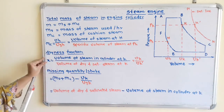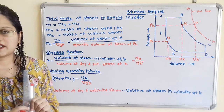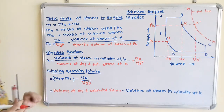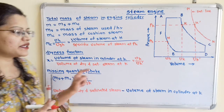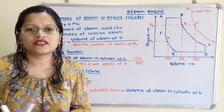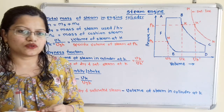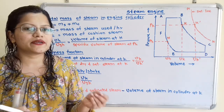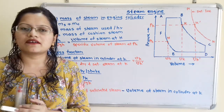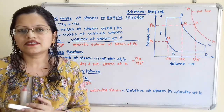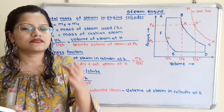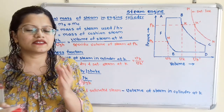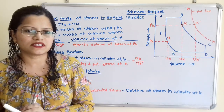Now we will move to the next term: missing quantity per stroke. The missing quantity arises because steam is getting condensed inside the cylinder — that is, steam is being converted into water droplets — and there is some missing quantity of steam.